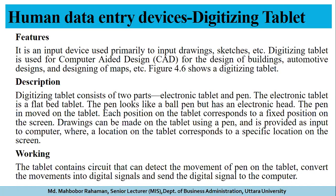A digitizing tablet is an input device used primarily to input drawings and strokes. It is used for computer-aided design, building design, automotive design, and map design. It consists of two parts: an electronic flatbed tablet and a pen that looks like a ballpoint pen but has an electronic head. The pen is moved on the tablet and its position corresponds to a fixed position on the screen. The tablet contains circuits that detect the movement of the pen, convert it into digital signals, and send the signals to the computer.